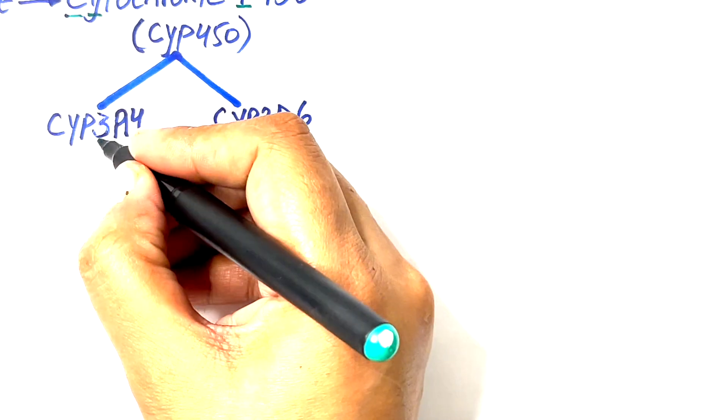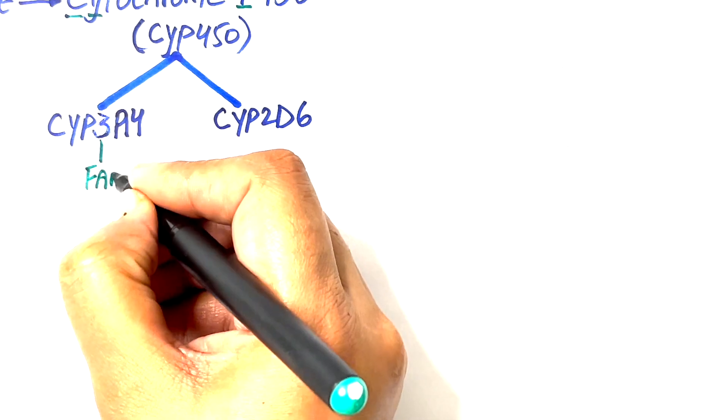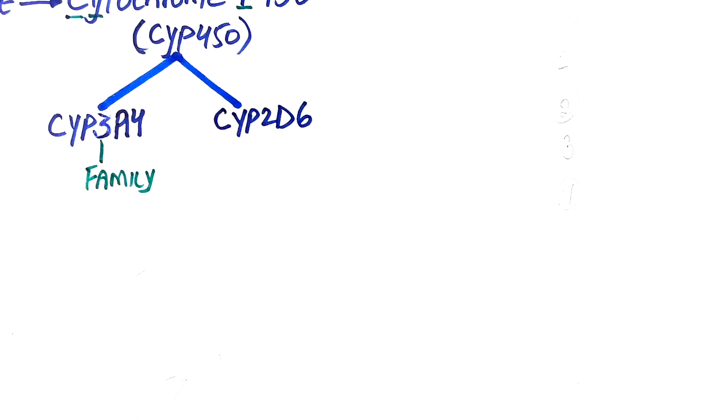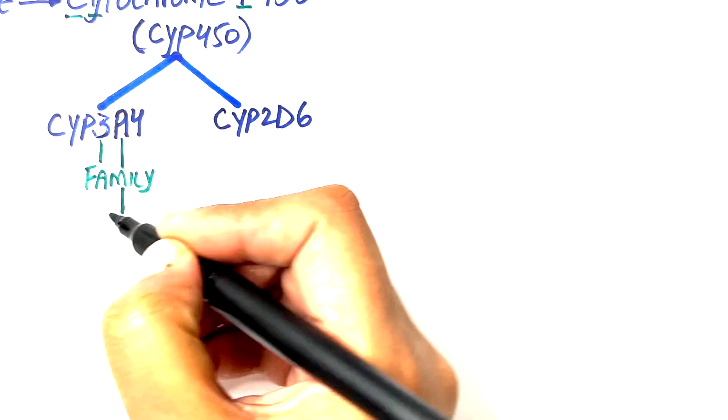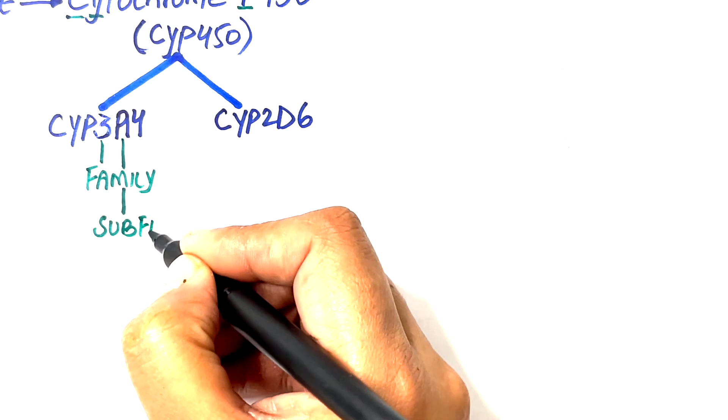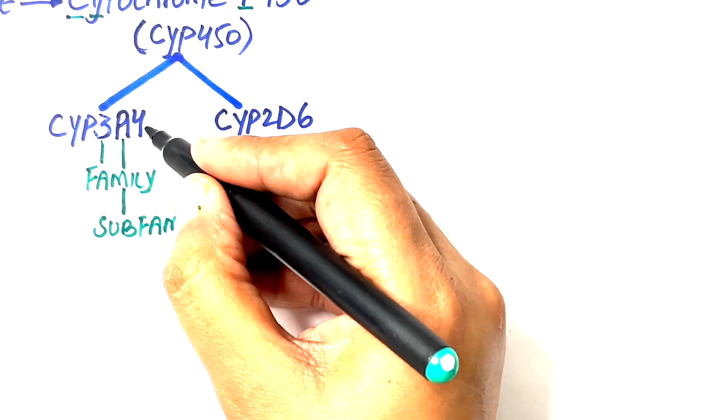Consider the enzyme CYP3A4. The first number after CYP designates the family, the capital alphabet designates the subfamily, and then the last number designates the isozyme type.